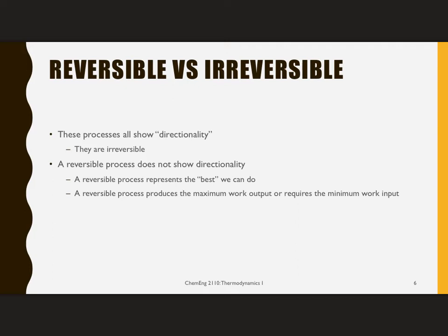We want to define what a reversible process is — one that does not show directionality. A reversible process is going to be important to us because it represents the best that we can do thermodynamically speaking. A reversible process is going to produce the maximum work output from a process, or require the minimum work input for those that require work input.